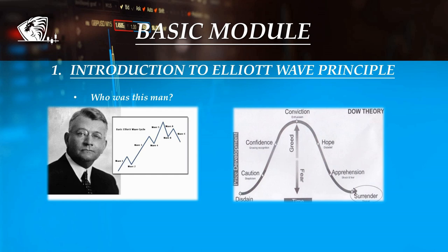Ralph Nelson Elliott was an American accountant who in the early 1930s studied 75 years worth of stock market data, mostly indexes, from yearly charts all the way down to 30-minute charts. He discovered that the stock market did not move randomly and chaotically as was believed then, and that it actually followed natural laws which could be measured and predicted using the Fibonacci sequence or golden ratio. Basically, he noticed that prices unfolded in specific patterns. He developed this amazing analytical tool in the 1930s, and in 1938 he published his theory of market behavior in the book entitled The Wave Principle.